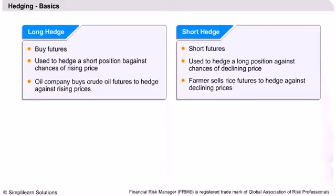There is always uncertainty associated with future dates, and traders usually hedge their uncertain positions through purchasing or selling futures contracts. In a short position, traders enter into a long hedge by buying futures contracts. This is done to protect them against chances of rising prices. For example, an oil company buys crude oil futures to hedge against rising prices.